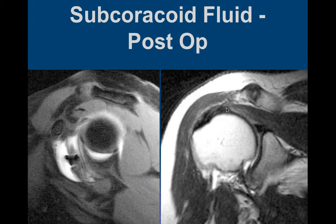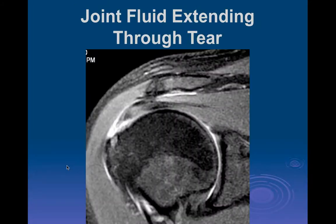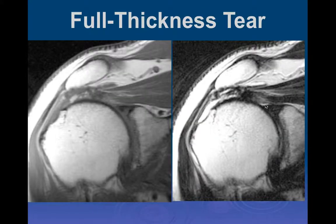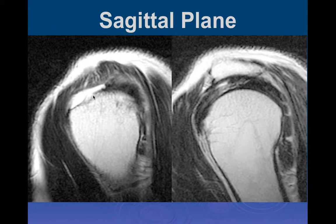Postoperatively, very often after surgery the spaces that normally don't communicate will communicate—here we can see subcoracoid fluid after surgery due to postoperative leaking. Here's a tear of the supraspinatus tendon at the footplate insertion, the typical location of a tear, with fluid in the subacromial-subdeltoid bursa on the sagittal plane. Here's another full-thickness tear with a downsloping acromion, a lot of eburnation and inferior osteophytes, a full-thickness tear with a little retraction of the muscle, seen also in the sagittal plane.